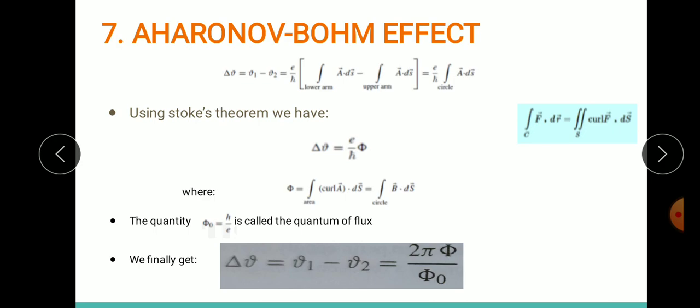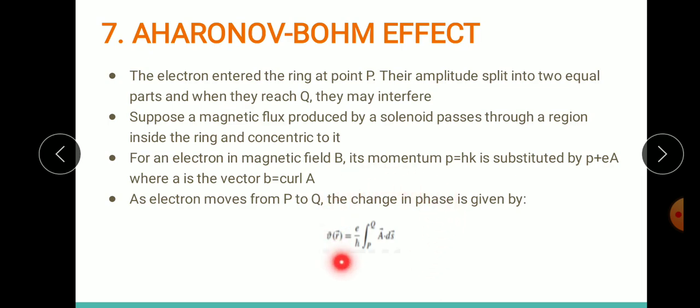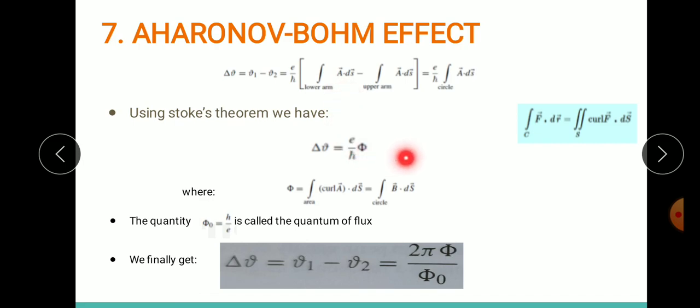Let me make this clear once again. I'm splitting the integral from P to Q into the lower arm and upper arm, which form a circle. From Stokes theorem, ∮ f·dr equals the surface integral of curl f·ds. Applying this, where f is A, we get surface integral of curl A·ds. Representing this by Φ, the equation becomes delta φ = (e/ℏ)Φ.